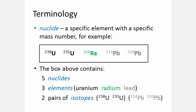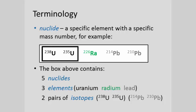Before we go on, let's review some terminology. A nuclide is a specific element with a specific mass number. For example, inside the box we have five different nuclides, but only three different elements: uranium, radium, and lead. And we have two pairs of isotopes, for example, U-238 and U-235, which are different nuclides of the same element.